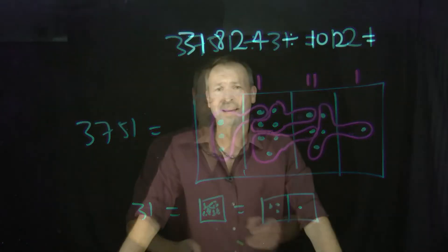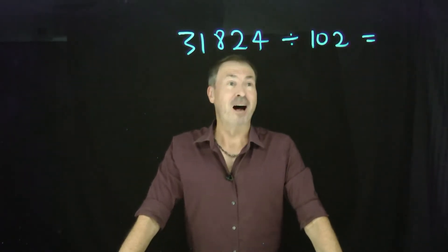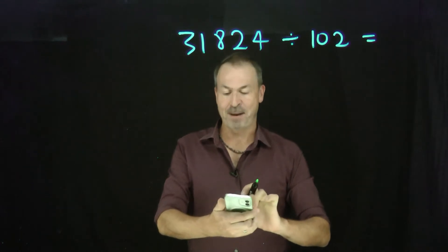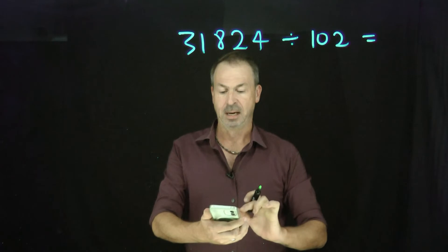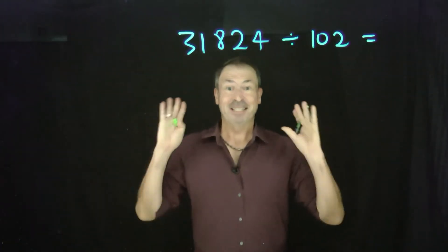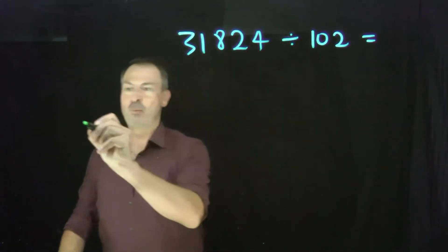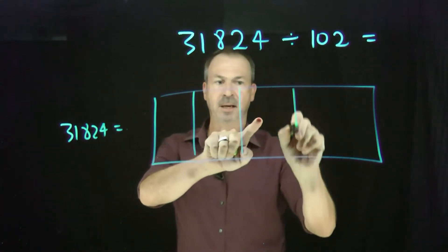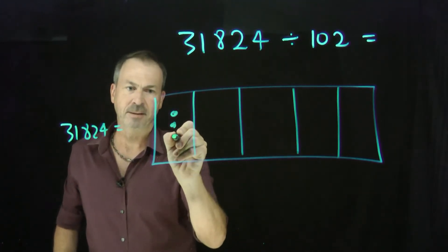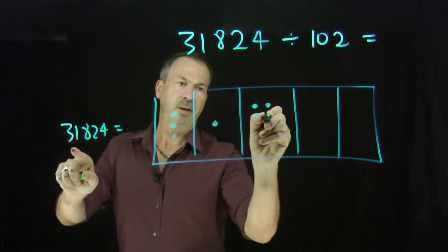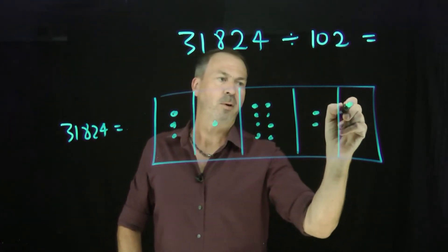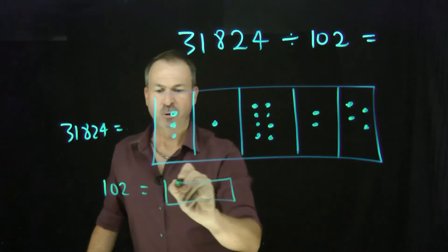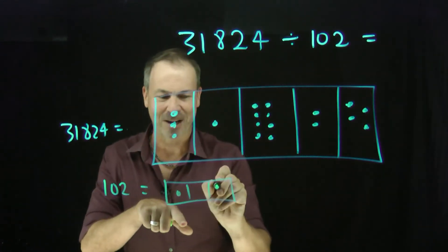Let's do another one. Alright, let's do 31,824 divided by 102. First of all, what's the answer? Let's get the answer. 31,824 divided by 102 — apparently it's 312. Okay, but let's see if we can get that because it's kind of fun drawing the pictures and seeing it visually. 31,824 — what does that look like? I need the ten thousands, one thousands, one hundreds, tens and ones. Three ten thousands, one thousand, eight hundreds, two tens and four. And I'm looking for groups of 102 this time. Now 102 dots in a box will give lots of explosions — I can see it's going to look like one dot, zero, two dots.